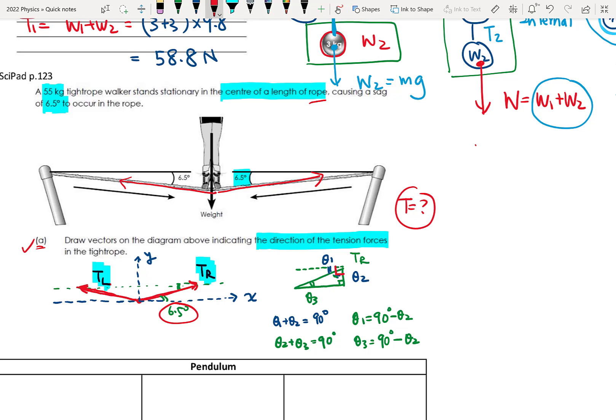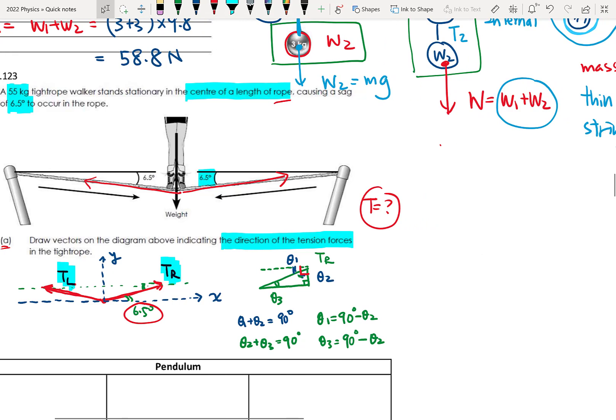But our target is we need to find the tension T. How big is tension T? So I draw a diagram again. So this is our X coordinate system. And this is our Y direction. And then for the weight is here. Tighter point is here. So we have a weight. And we have TR. And we have TL. And both here are 6.5 degrees. So now we can start to do the work.